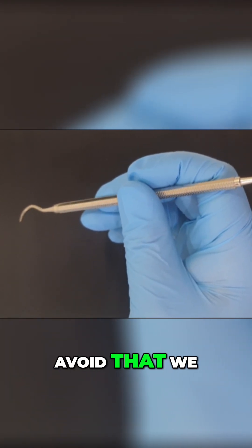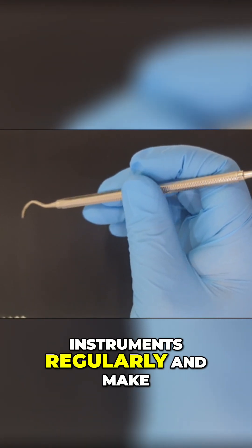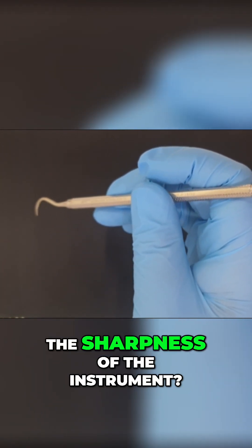So in order to avoid that, we need to sharpen our instruments regularly and make sure they are sharp. How to check for the sharpness of the instrument?